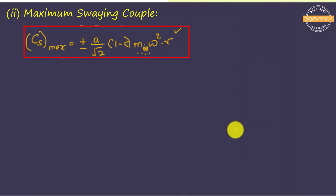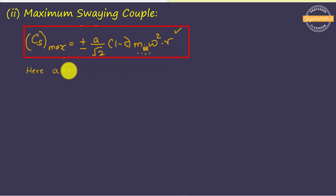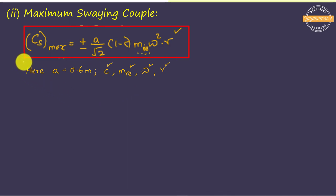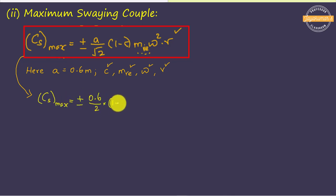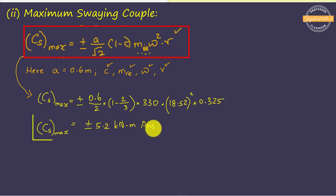Now let us find the second value, namely maximum swaying couple. The swaying couple value is equal to ±(a/√2)·(1 − C)·M_RE·ω²·r. Here, a is the distance between two cylinder centers, given as 600 mm. We know all the values, so by mere substitution we get this second answer.